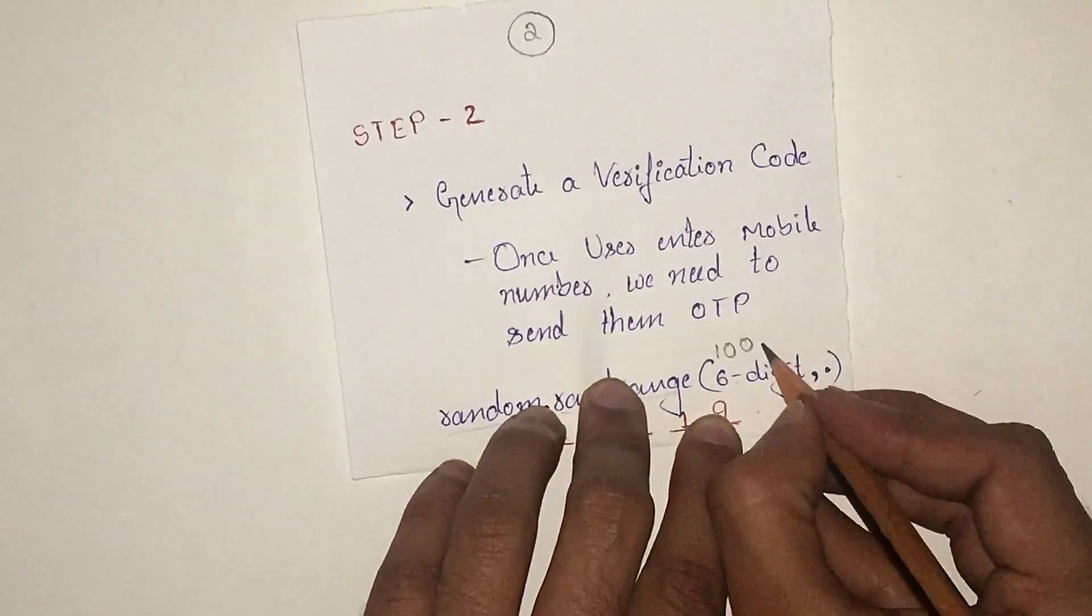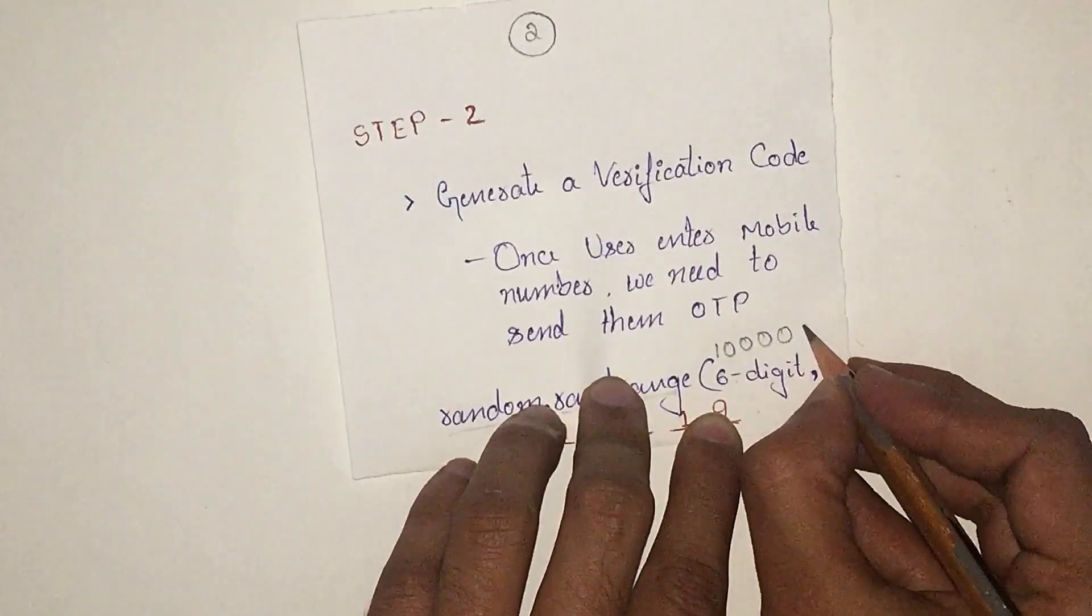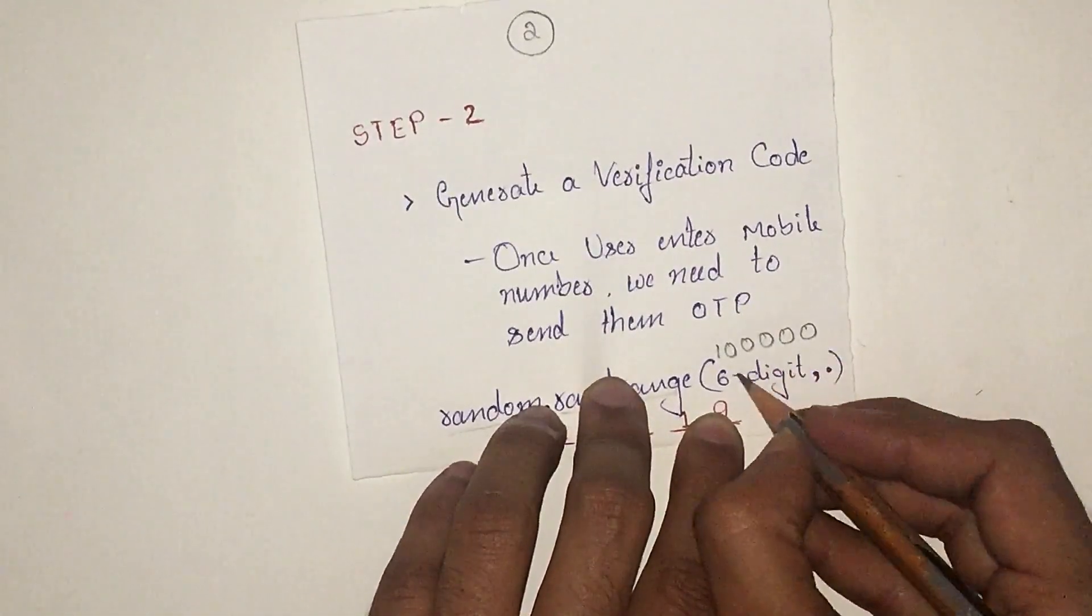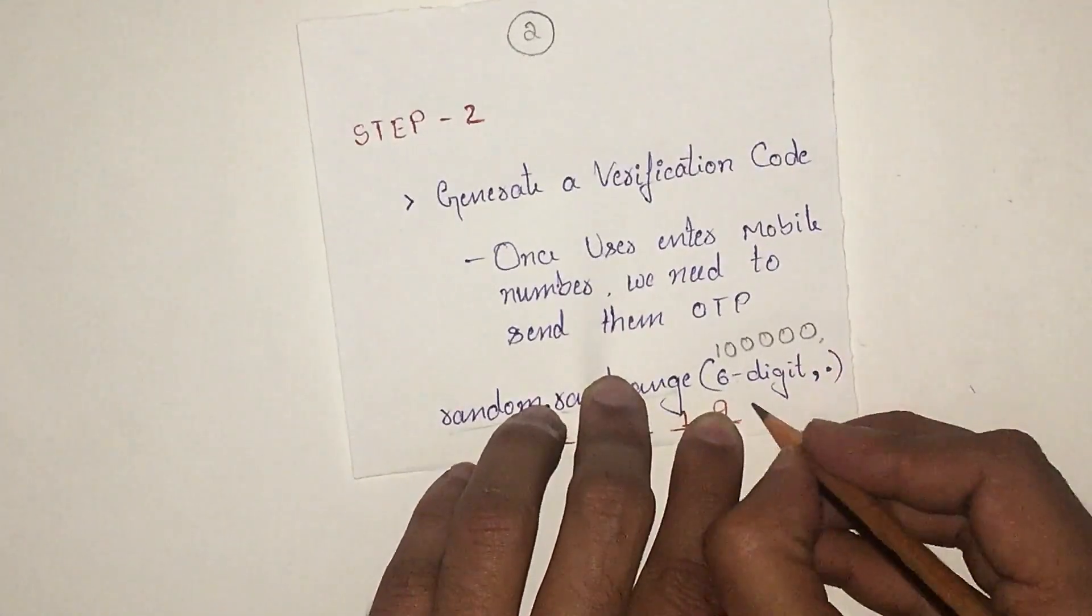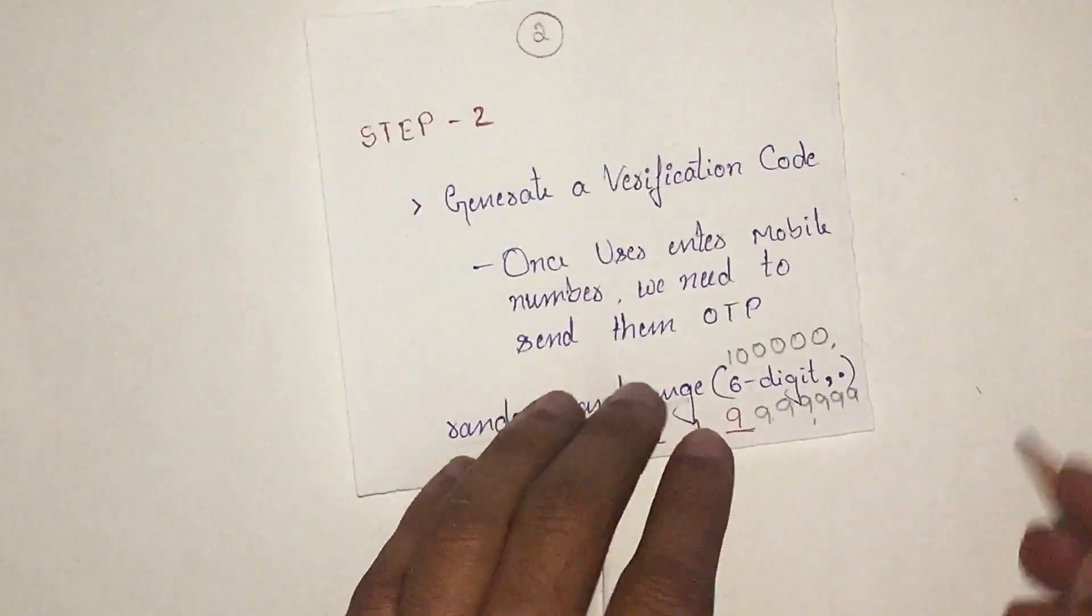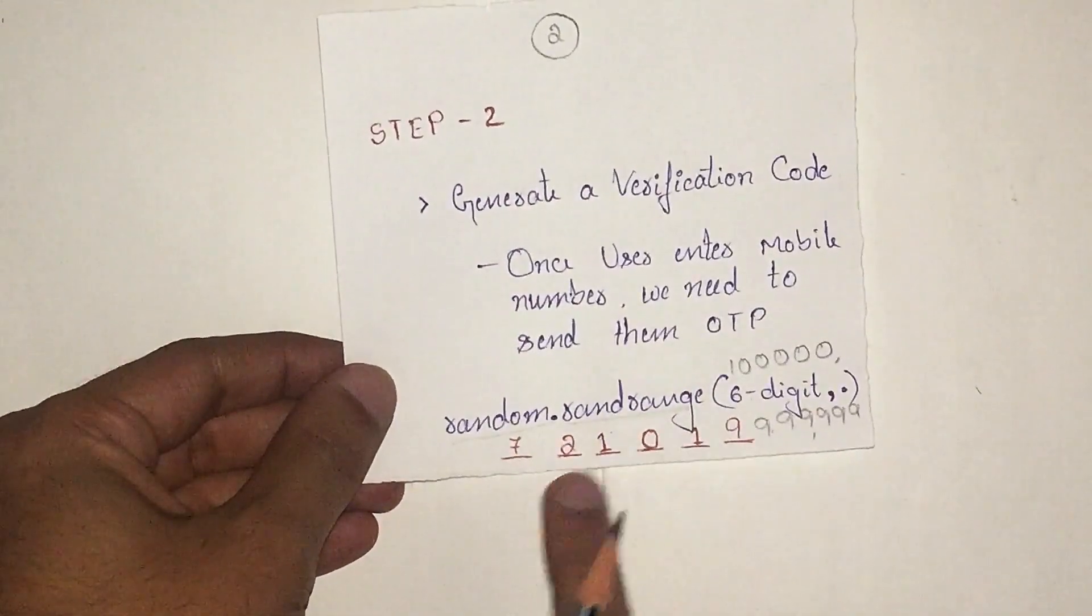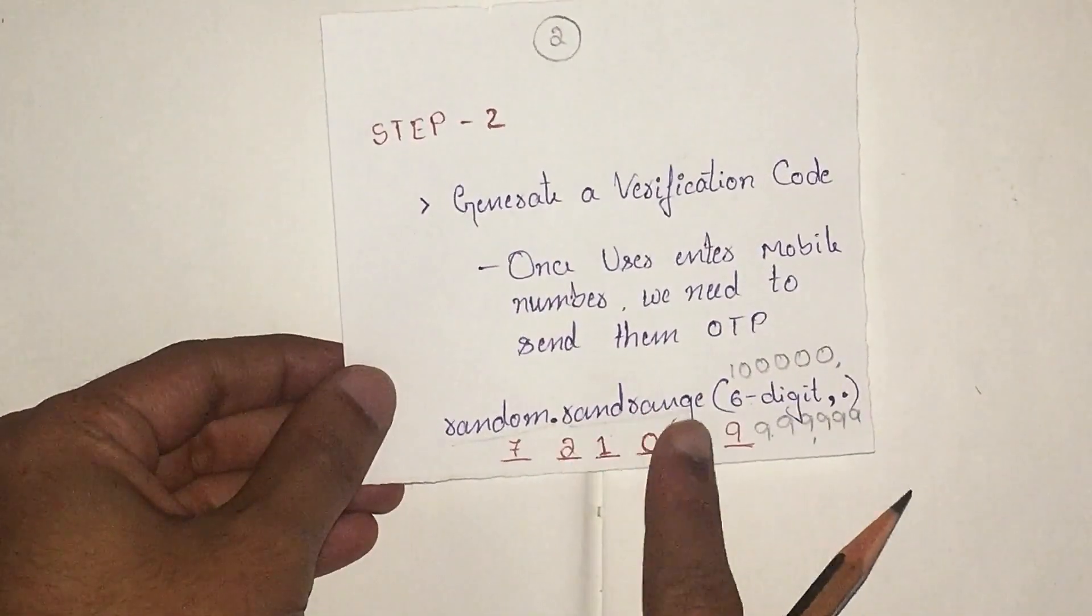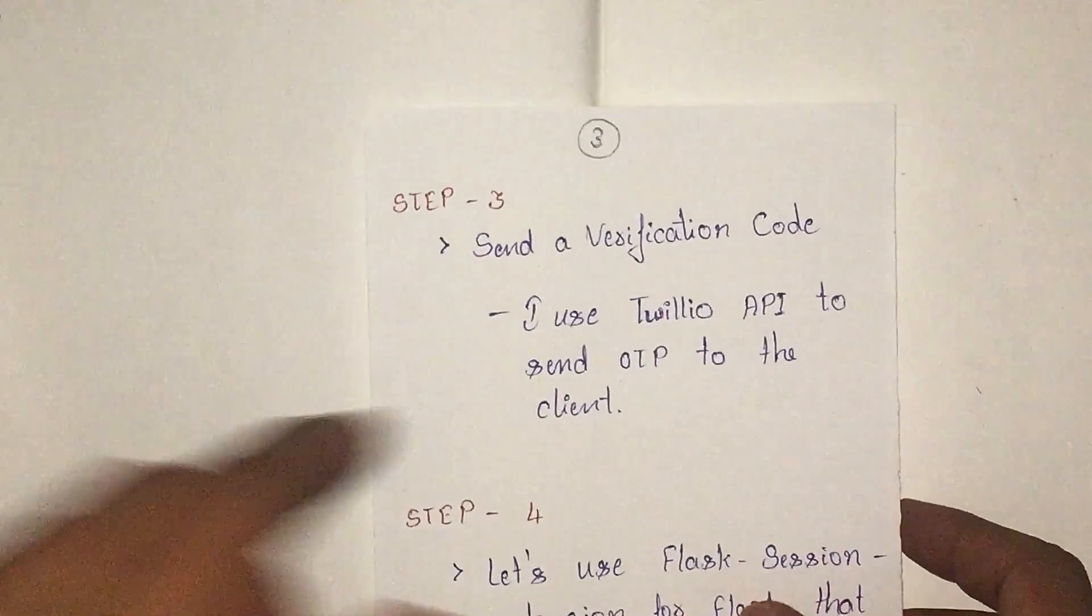Say a six-digit starts from 100,000 to 999,999. This is the first parameter and this is the second parameter. That's how we generate a PIN or OTP. Once you are done with this, we move to step 3.